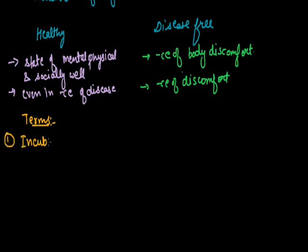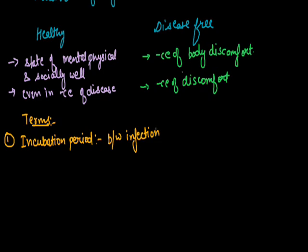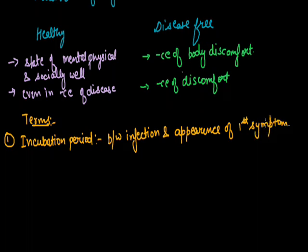There are various terms related to disease. The first is incubation period — it is the interval or period between infection and the appearance of the first symptoms of the disease. Infection occurs when a pathogen enters the body. Pathogens are disease-causing organisms like bacteria, viruses, and fungi.